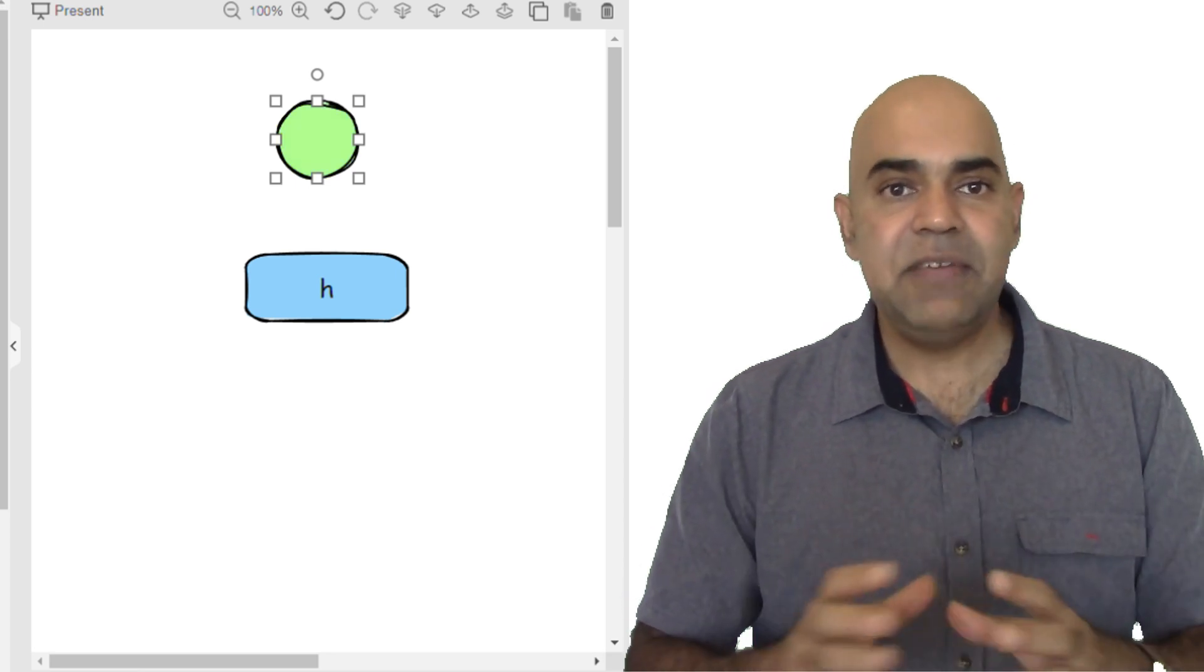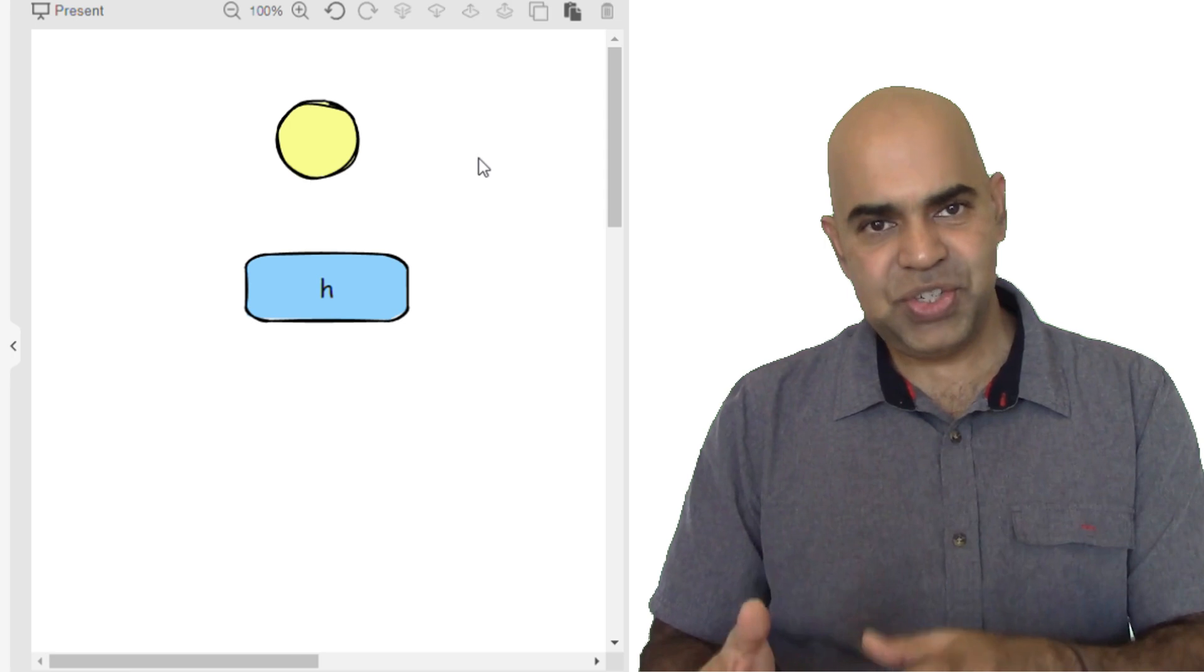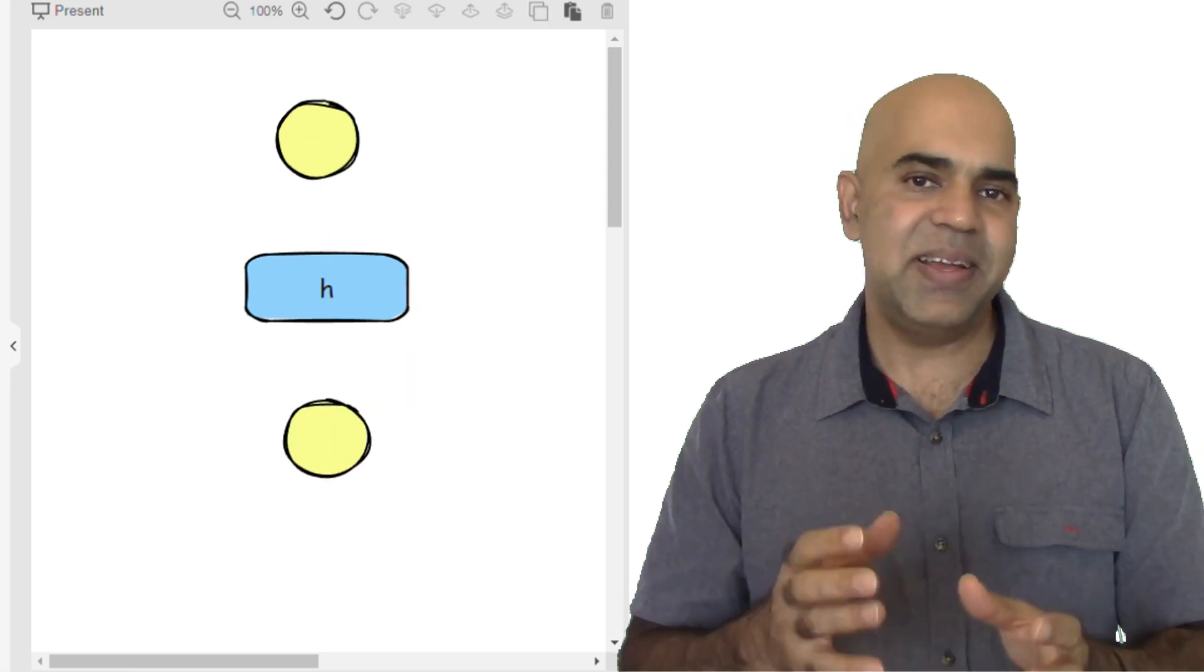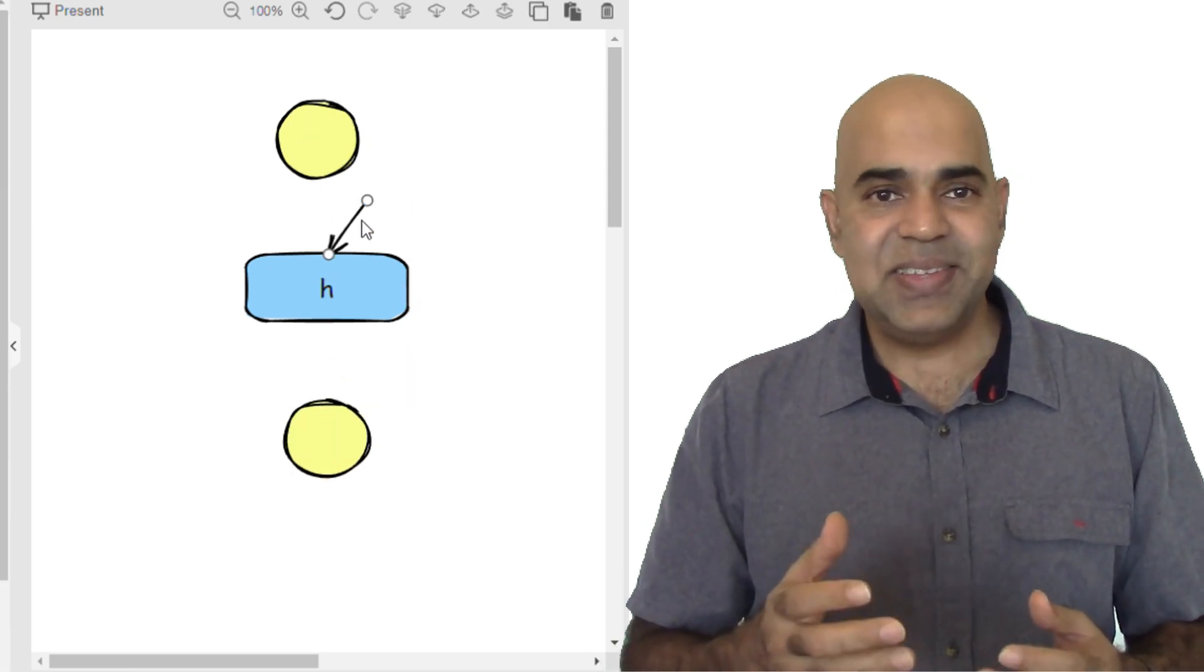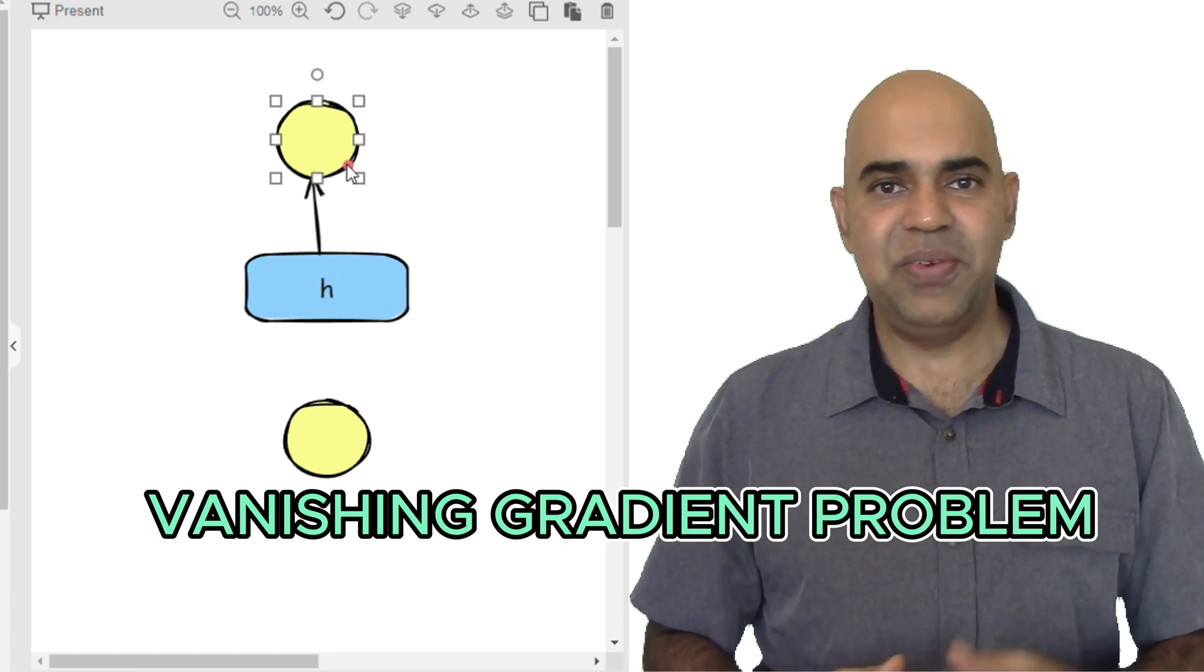However, RNNs had a significant limitation: the vanishing gradient problem and the exploding gradients issue. What is the vanishing gradient problem of RNN?